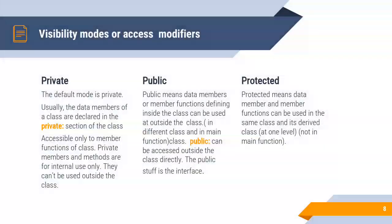Visibility modes or access modifiers are private, public and protected. Private means usually the data members of a class are declared in the private section of the class, so that they can be accessible only within the member function of this class. Private members and methods are for internal use only. They cannot be accessed by the outer world. And by default in a class the private mode is set.